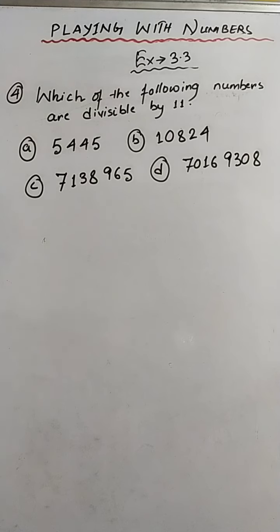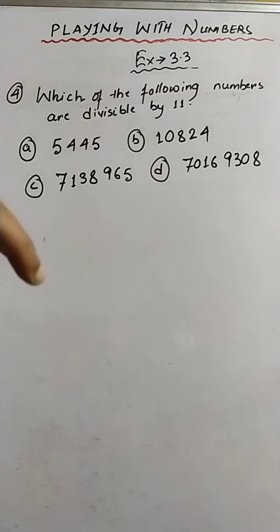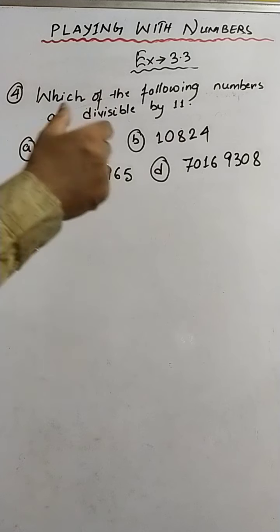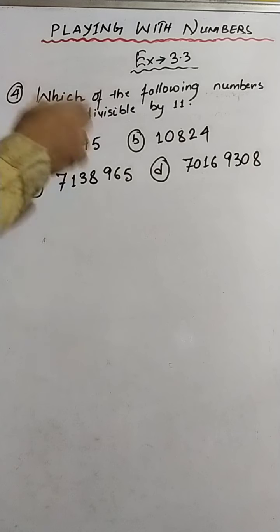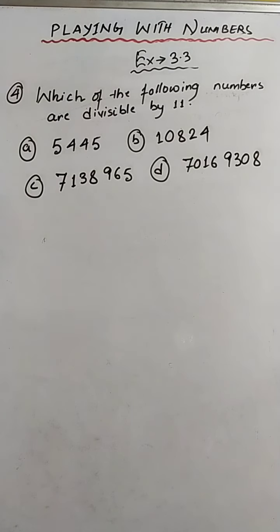So what is the rule? The rule is that if any number has to be divisible by 11, then the difference between the sum of the digits at odd places and the sum of the digits at even places should be either 0 or 11. Only then the number will be divisible by 11.